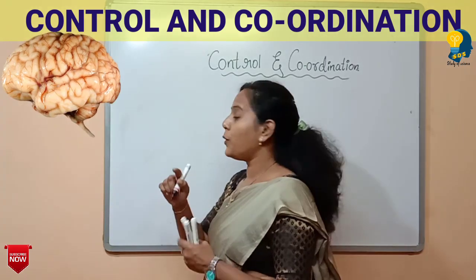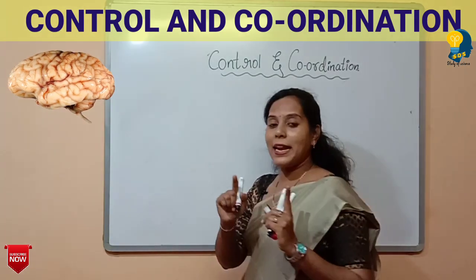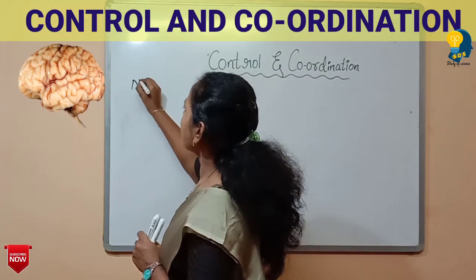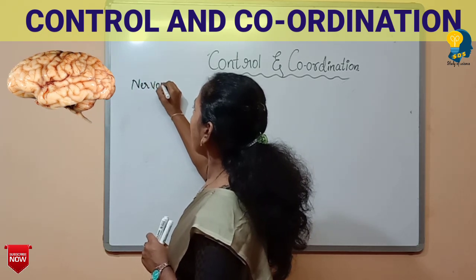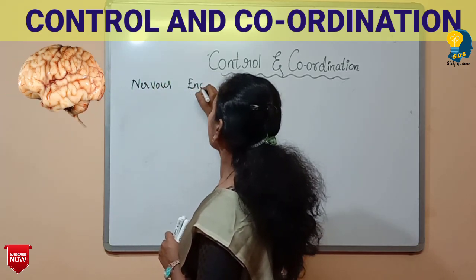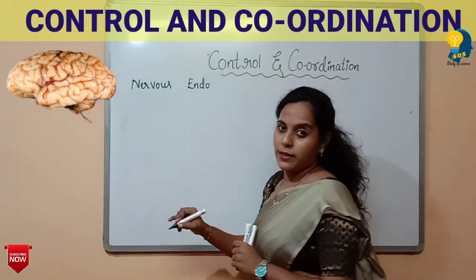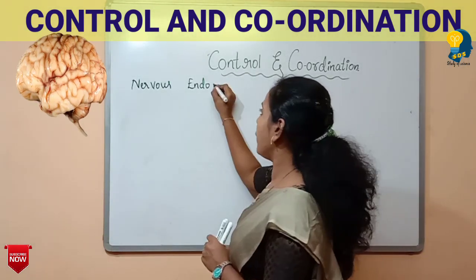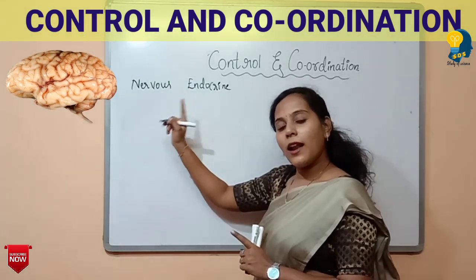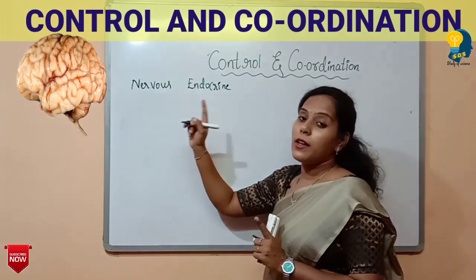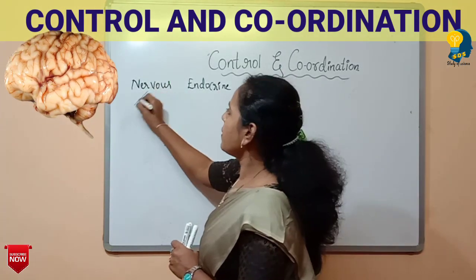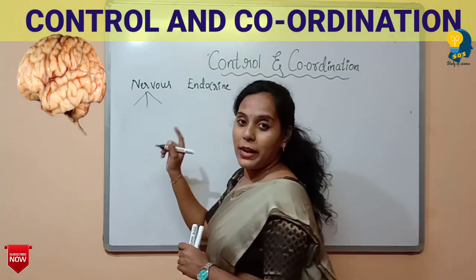We understood that we are going to learn mainly about two systems in this lesson — one is the nervous system and the other is the endocrine system. Under the nervous system, you have understood the categories or the classification.